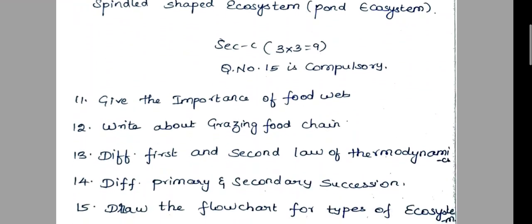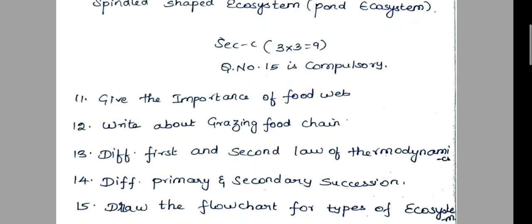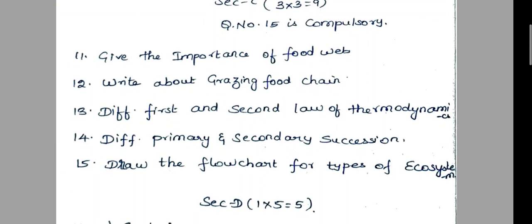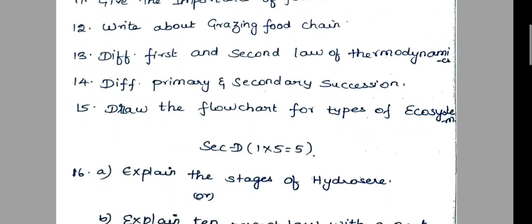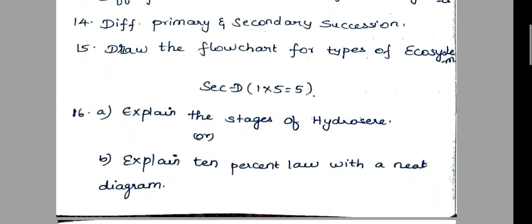3 marks: give the importance of food web, write about grazing food chain, differentiate first and second law of thermodynamics. 4th question: primary and secondary succession difference. 15th question: draw the flow chart for the types of ecosystem.